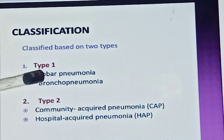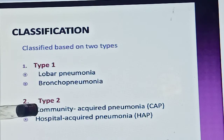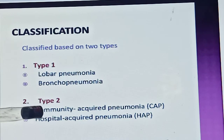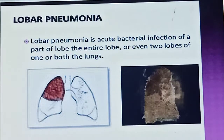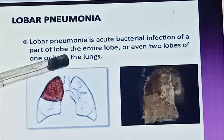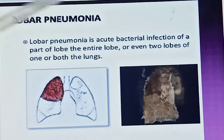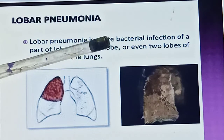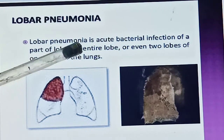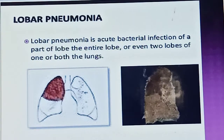If we classify pneumonia, the classification is based on two types. Type one includes lobar pneumonia and bronchopneumonia. Type two is community-acquired pneumonia and hospital-acquired pneumonia. Lobar pneumonia, as clear from the name, is an acute bacterial infection of part of a lobe, an entire lobe, or even two lobes of one or both lungs.